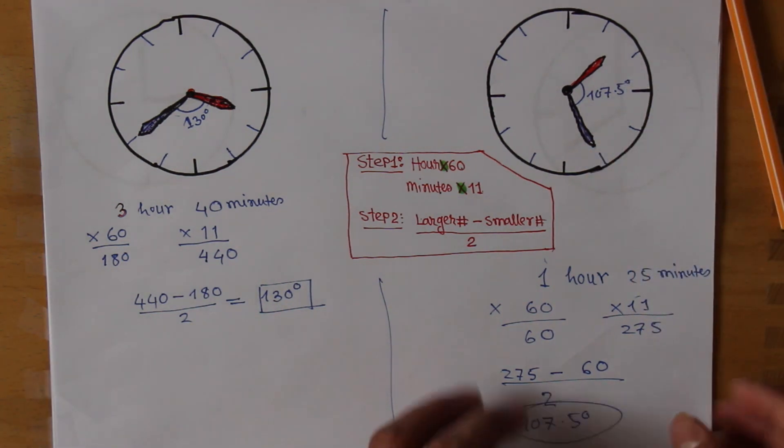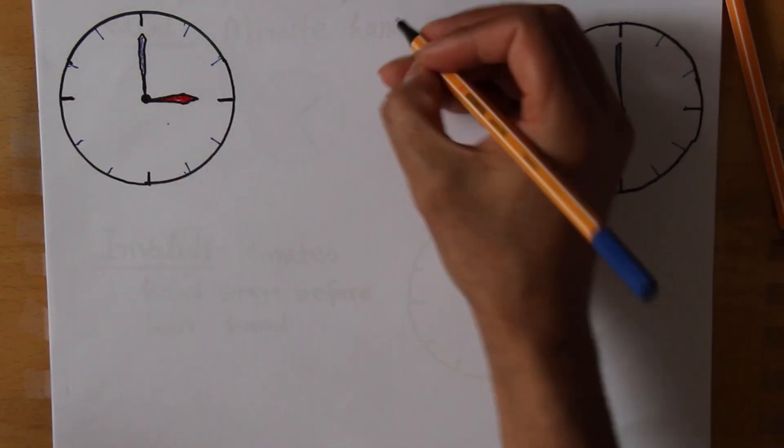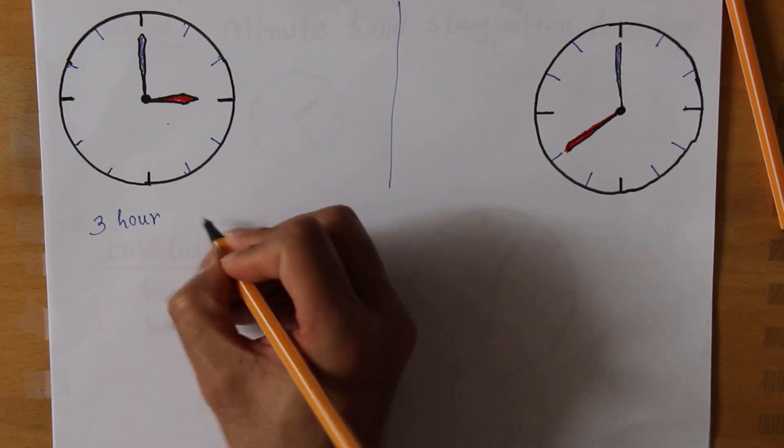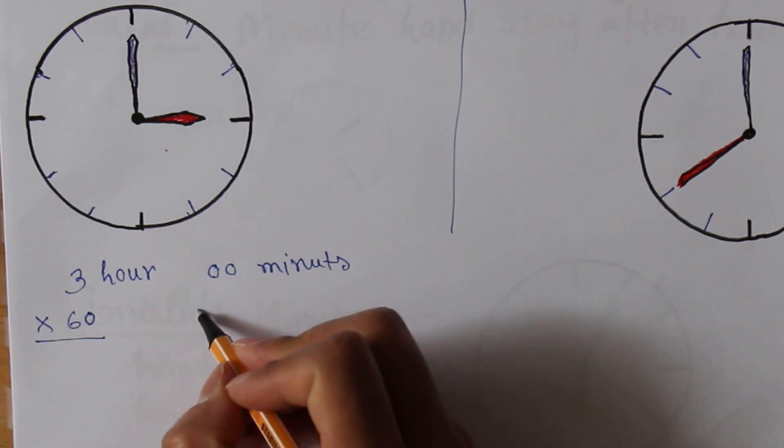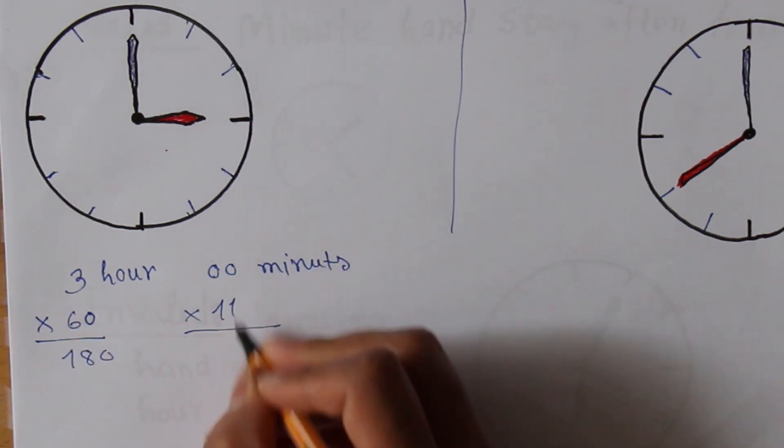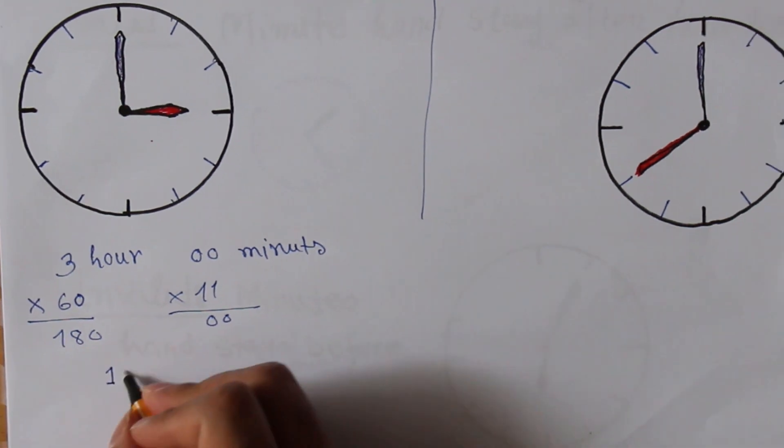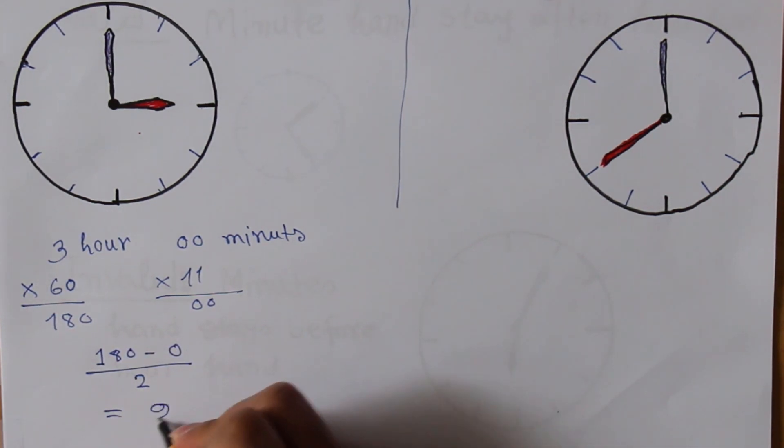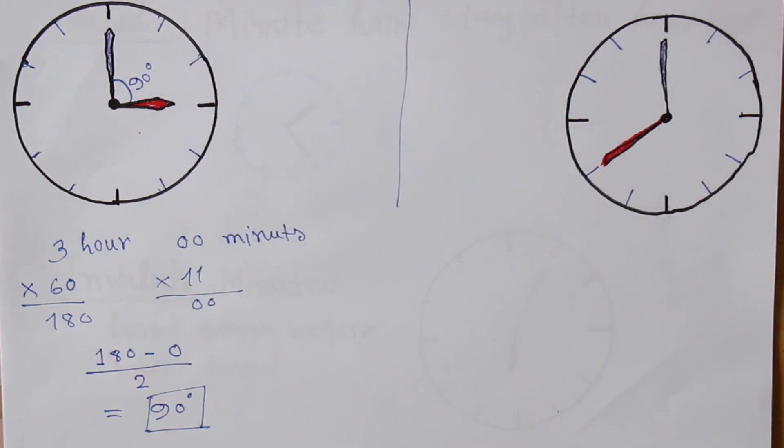Isn't it simple? Let's try case number 3. This clock is showing 3 o'clock exactly, 3 hours and 00 minutes. We multiply the hour by 60 and the minutes by 11. So, 60 times 3 is 180 and 11 times 0 equals 0. Second step: 180 minus 0 divided by 2, which equals 90 degrees. Yes, this is the answer. This angle is exactly 90 degrees.